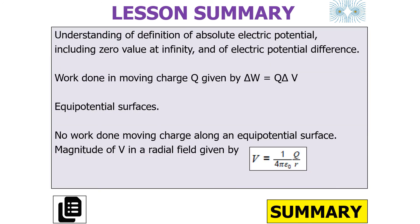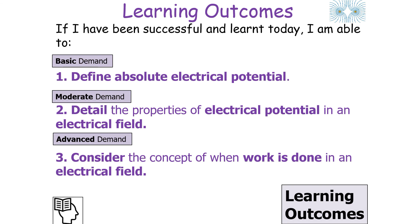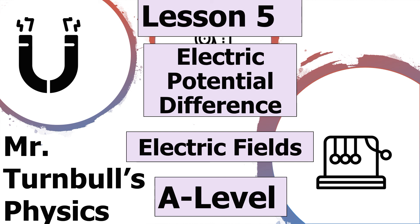In today's lesson we've looked at the concept of absolute electrical potential including the zero value at infinity, and electrical potential difference. We know that work done for a moving charge is given by W = QV. We understand the concept of equipotential surfaces and that no work is done moving a charge along an equipotential surface. Hopefully we can define absolute electrical potential, detail its properties in an electrical field, and consider the concept of work done in an electrical field. Thank you for listening and have a lovely day.